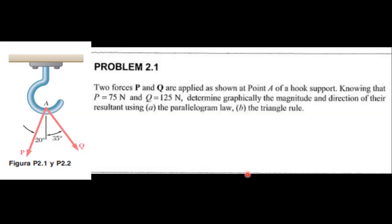Hi guys, welcome to a new video. This time I will teach you how to resolve problem 2.1 of Vector Mechanics for Engineers by Beer and Johnston. Two forces P and Q are applied at point A of a hook support. Knowing that P equals 75 newtons and Q equals 155 newtons, determine graphically the magnitude and direction of the resultant using the parallelogram law and triangle rule. In this video I use only the triangle rule. I did another video where I resolved that exercise with the parallelogram law — I'll leave that video link below in the description.